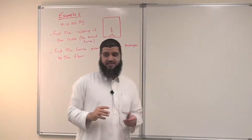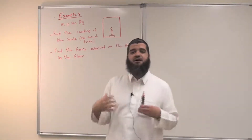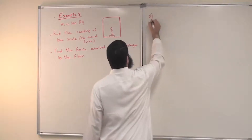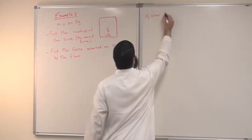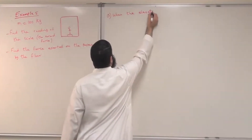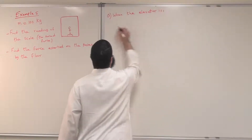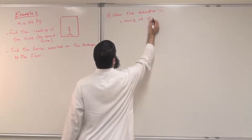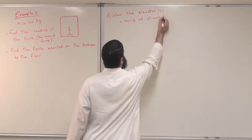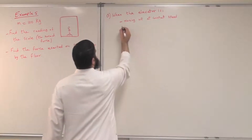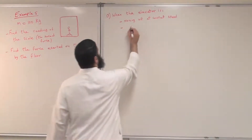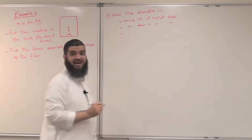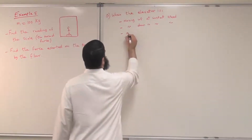Now we'll have different cases. This is the statement of the problem, but we will try to find it in different cases. Let me start with Case A. Find this reading when the elevator is moving up at constant speed, or moving down at constant speed, or even if the elevator is at rest.